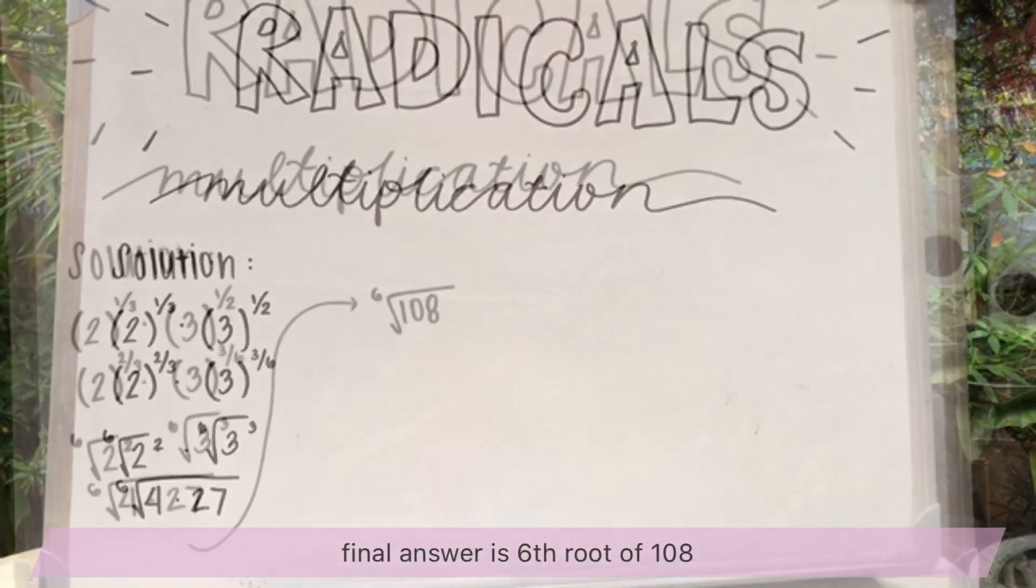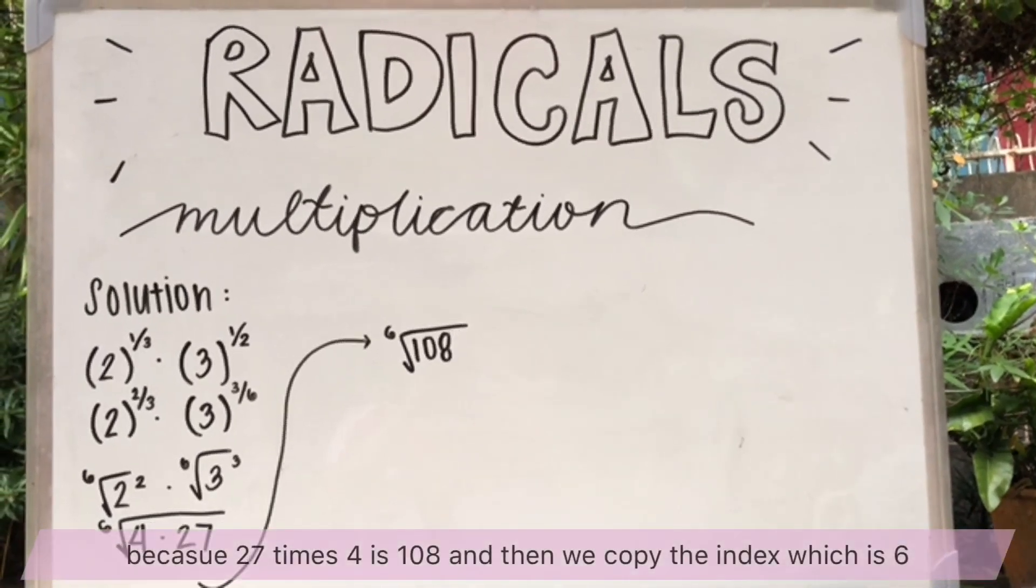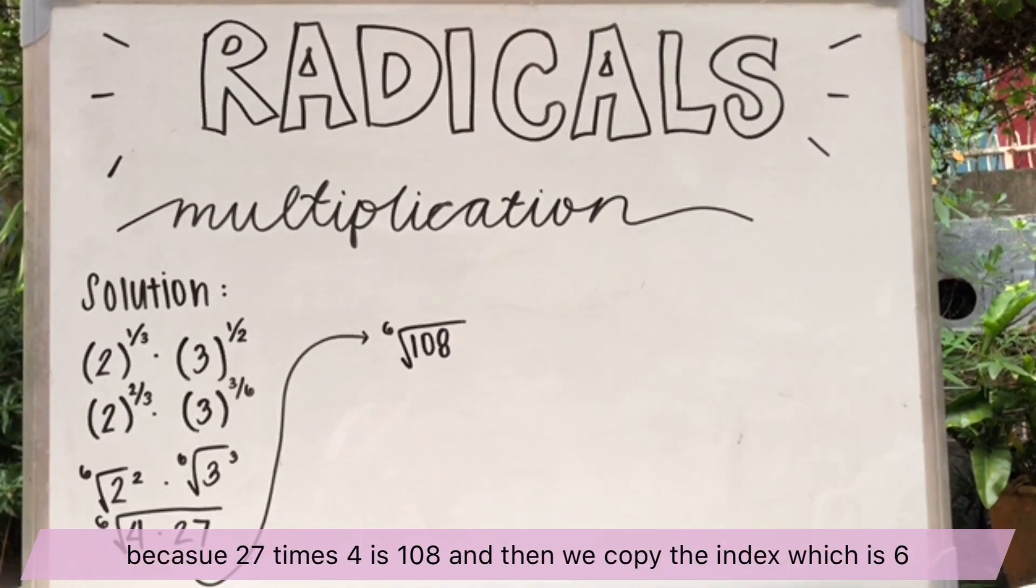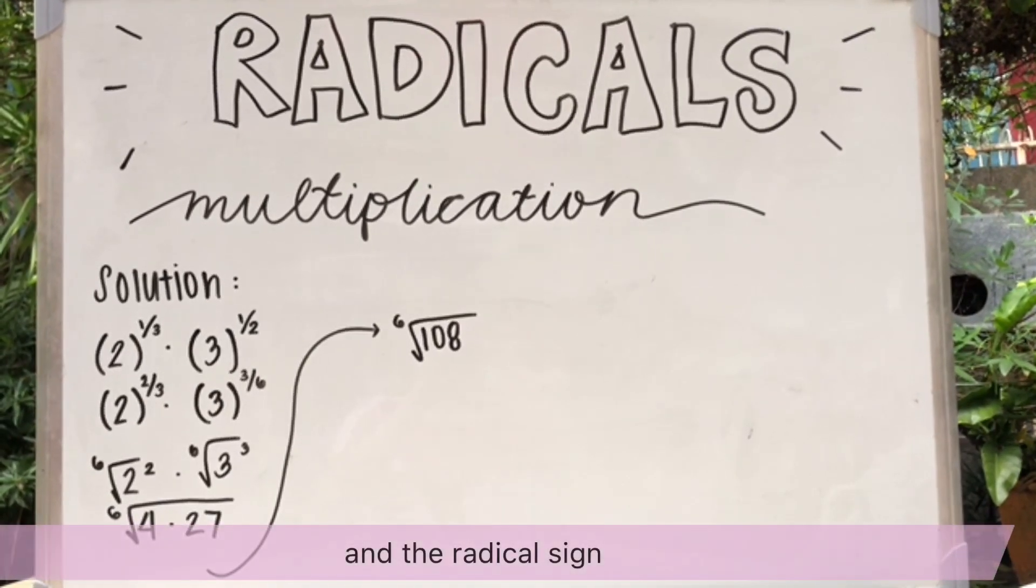Final answer, 6 root of 108. Because 27 times 4 is 108. And then we copy the index, which is 6, and the radical sign.